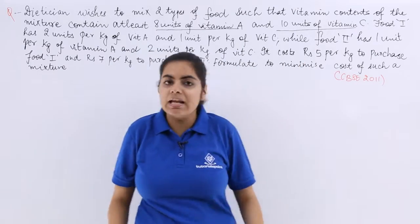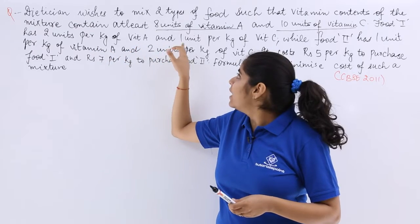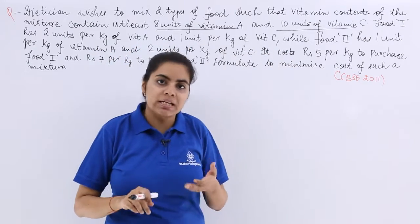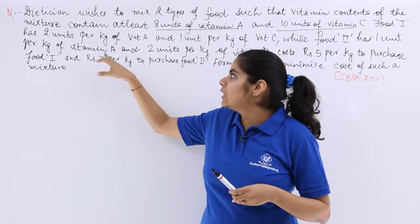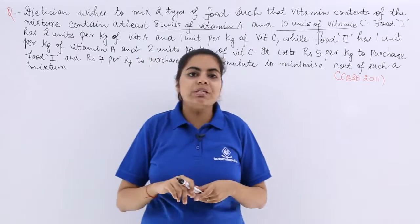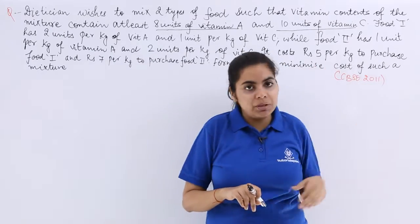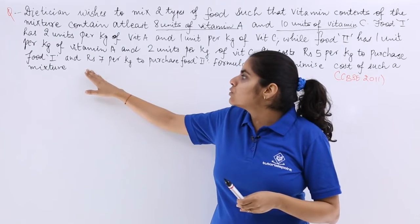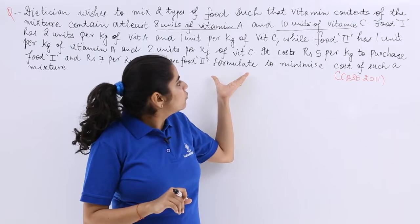Now food 1 has 2 units per kg of vitamin A and 1 unit per kg of vitamin C. Then there is food 2 which has 1 unit per kg of vitamin A and 2 units per kg of vitamin C. Now it costs Rs 5 per kg to produce food 1 and Rs 7 per kg to produce food 2.